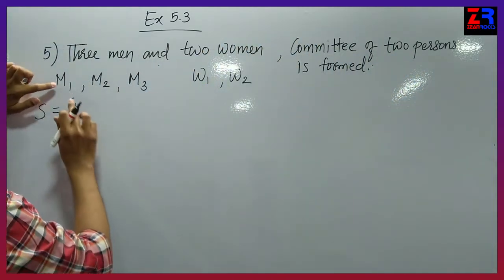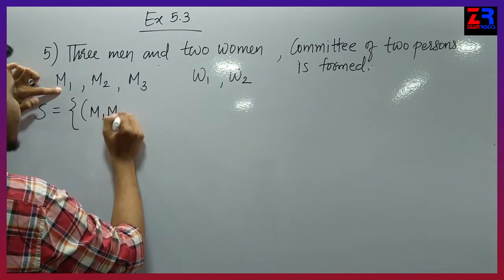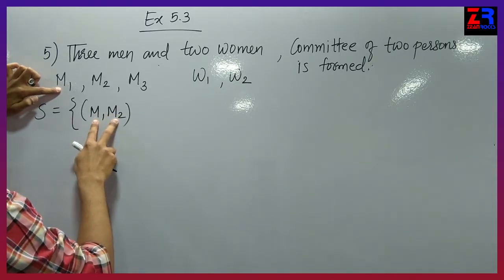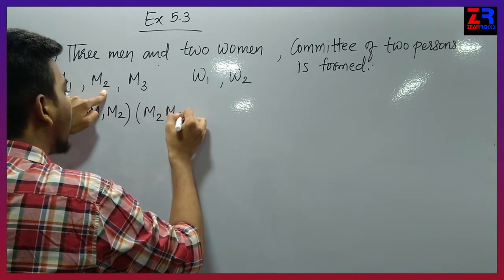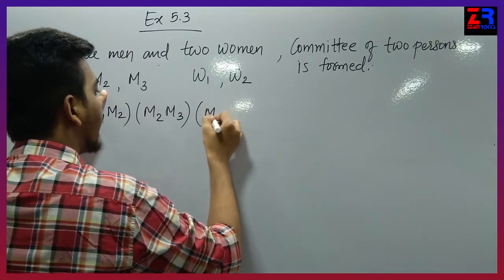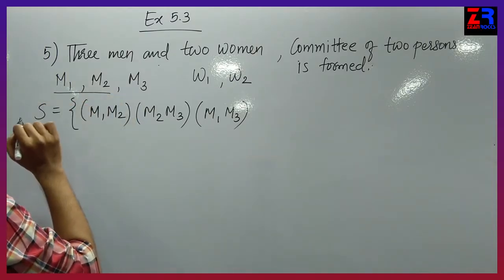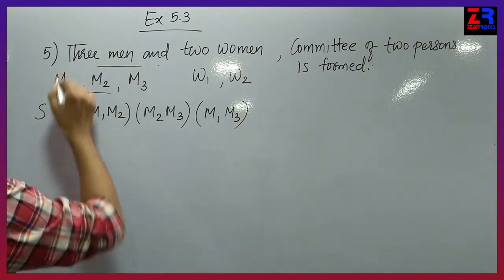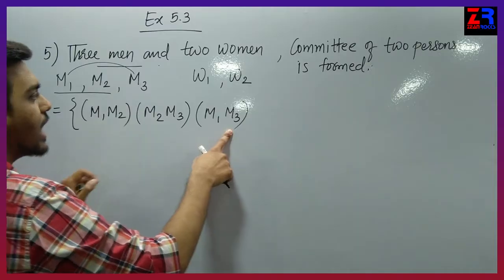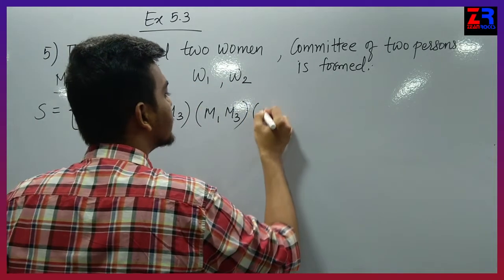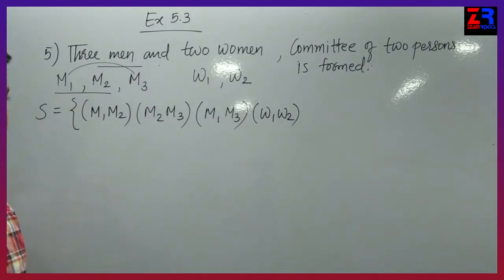Committees of two men: {M1, M2}, {M2, M3}, {M1, M3}. Committee of two women: {W1, W2}. Now combining one man and one woman: {M1, W1}, {M2, W1}, {M3, W1}, then with second woman: {M1, W2}, {M2, W2}, {M3, W2}. Total possibilities for a two-person committee = 10. Therefore N of S equals to 10.